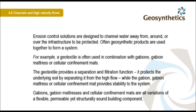Often geosynthetic products are used together to form a system. For example, a geotextile is often used in combination with gabions, gabion mattress, or cellular confinement mats. The geotextile provides a separation and filtration function, protecting the underlying soil by separating it from the high flow, while the gabion, gabion mattress, or cellular confinement mat provides stability to the system.